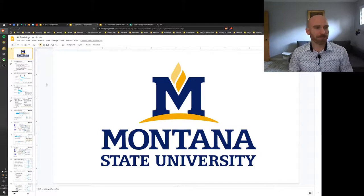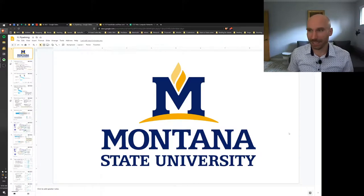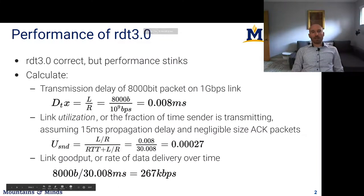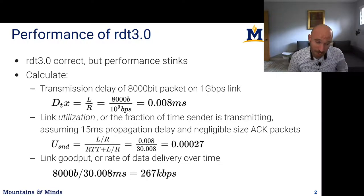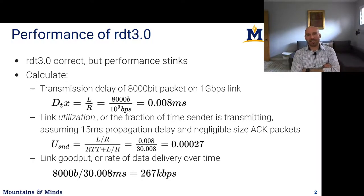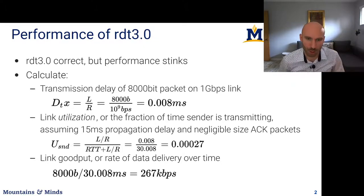Today we'll start getting into more mechanisms of TCP. Last time we talked about reliable data transfer RDT 3.0, which is a pretty correct protocol in that it can deal with packet loss and packet corruption. Unfortunately its performance is not so great, so let's see what the performance is and how we can improve it with pipelining.